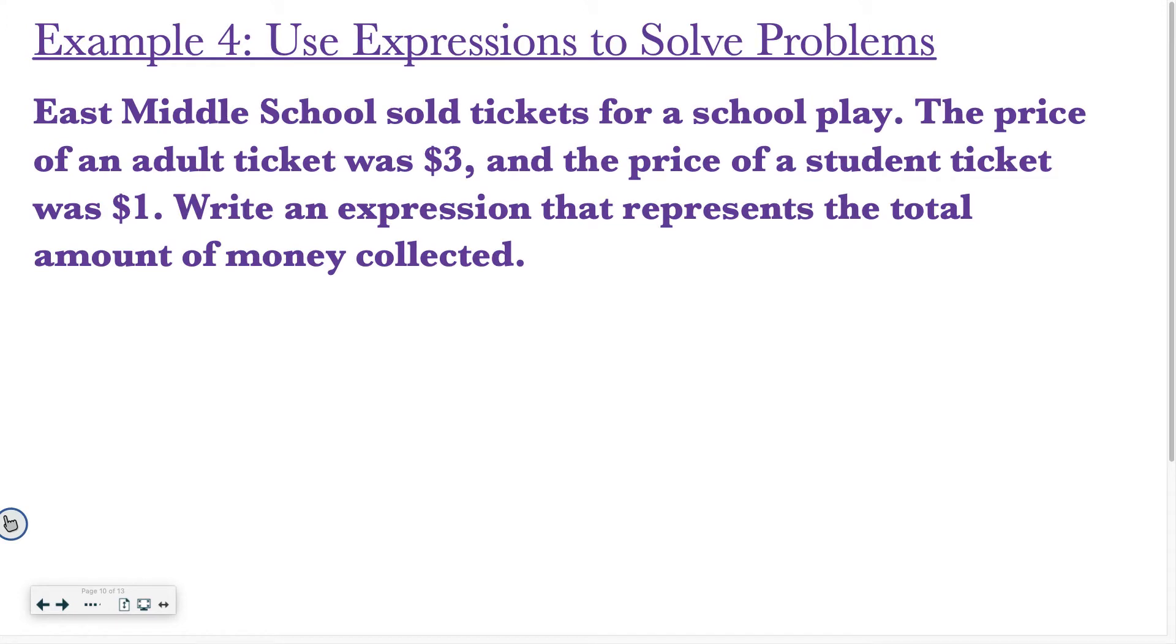All right, let's look at a word problem. East Middle School sold tickets for a school play. The price of an adult ticket was $3. Okay, so I know adult ticket and $3. And the price of a student ticket was $1. Write an expression that represents the total amount of money collected. Okay, so I know adult tickets are $3. So if there's one adult that went to the play, that would just be $3, right? If there were two adults that went, it would be $6 because I would have 3 plus 3. But what if I had like 10 adults that wanted to go? How would I find that? I'd have to either do 3 plus 3 plus 3 all the way until I added 10 threes together, or I could say 3 times 10, right, to find out the price of adult tickets.